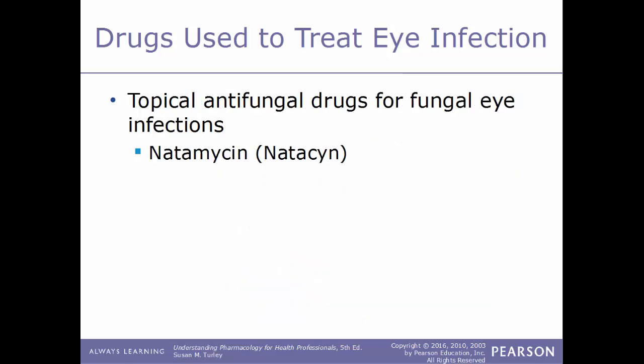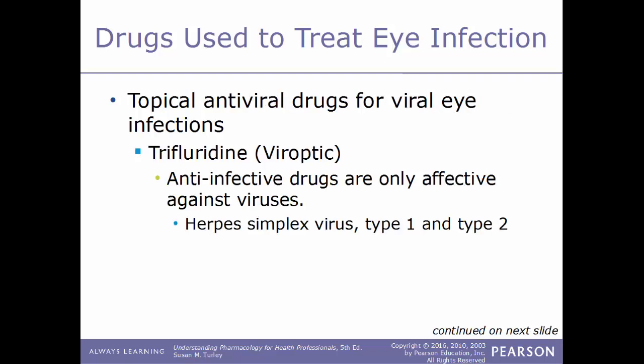Another type of drug used to treat eye infections are topical antifungal drugs. We have one example here — natamycin, sold under the trade name Natacyn. The other type of drug used for eye infections would be topical antiviral drugs. An example of this kind of drug would be trifluridine, sold under the name Viroptic. This is a type of anti-infective drug that's only effective against viruses, such as herpes simplex virus 1 and 2.